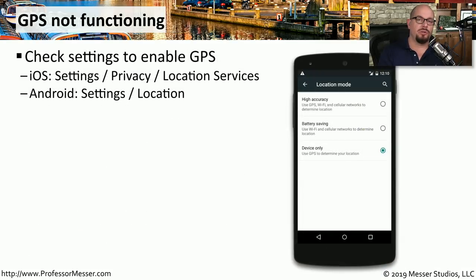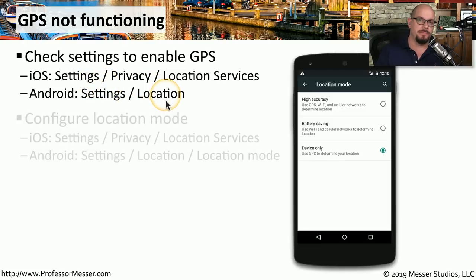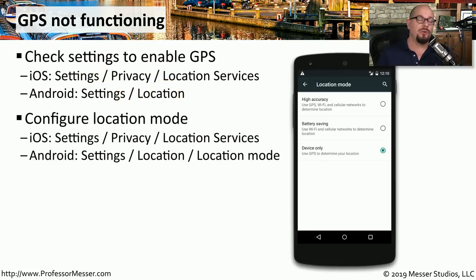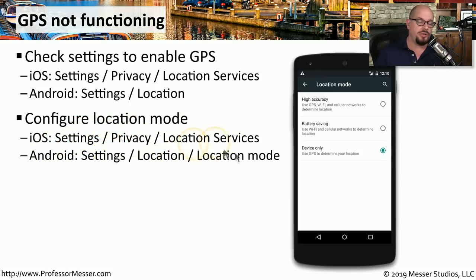Mobile devices include GPS hardware that allows applications to know exactly where you are. If GPS is not working properly, check the settings to make sure it is turned on. In iOS, go to Settings > Privacy > Location Services. On Android, go to Settings > Location. You may also have options for how GPS interoperates with other location services, configurable from the location mode settings — in iOS under Settings > Privacy > Location Services, and on Android under Settings > Location > Location Mode.